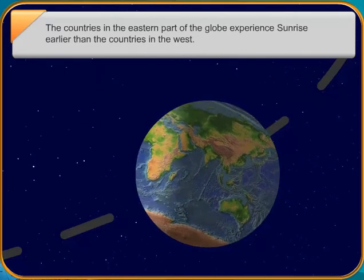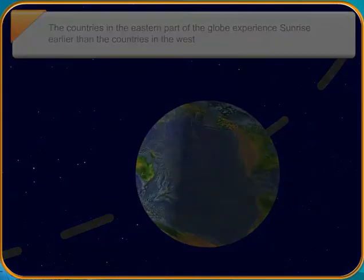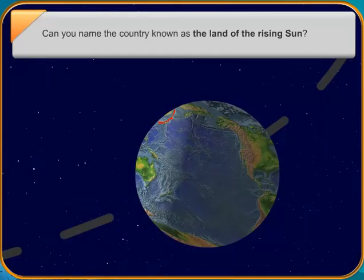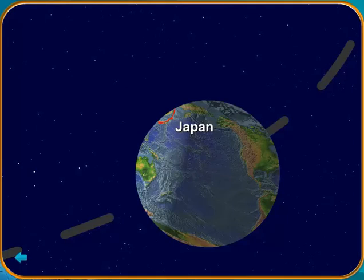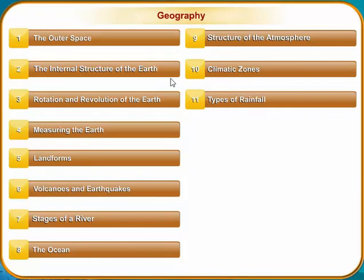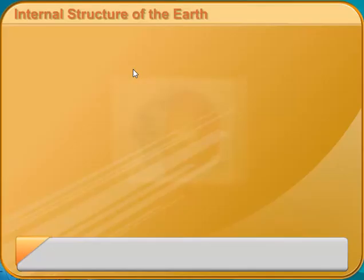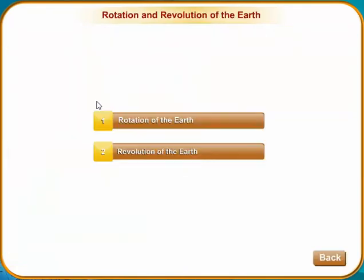What is the difference between the Earth's rotation and revolution? The spinning of the Earth on its axis is called rotation, while the movement of the Earth around the Sun is called revolution. The Earth takes 365 days, 6 hours and 8 minutes — approximately 365 and one-fourth days — to complete one revolution around the Sun. That is why a year has 365 days.